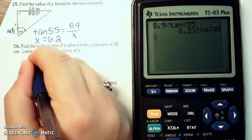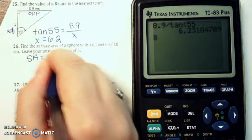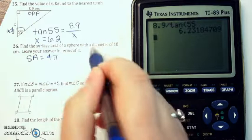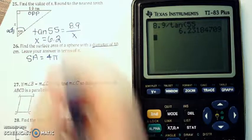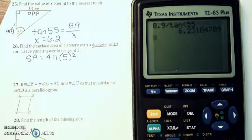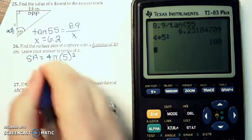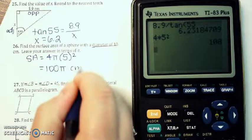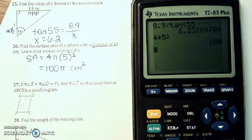Surface area of the sphere is 4 pi times your radius squared. Now this says the sphere has a diameter of 10, so the radius is 5, and we're going to leave that in terms of pi. So I'm going to do 4 times 5 squared, which is 100, and that would be my answer, 100 pi centimeters squared here since we're talking about area.